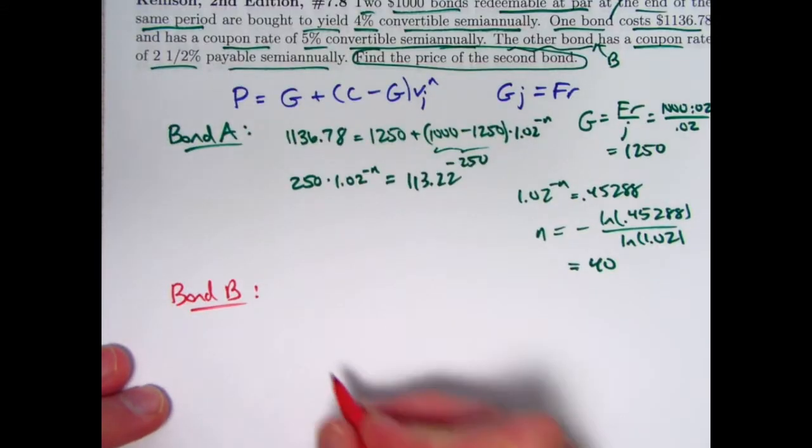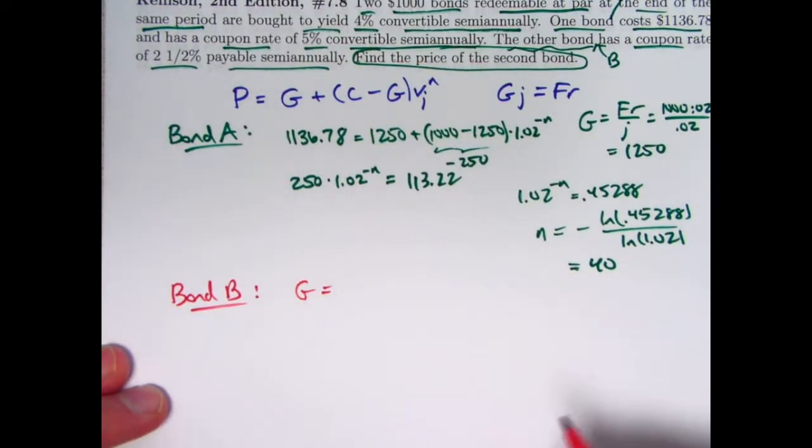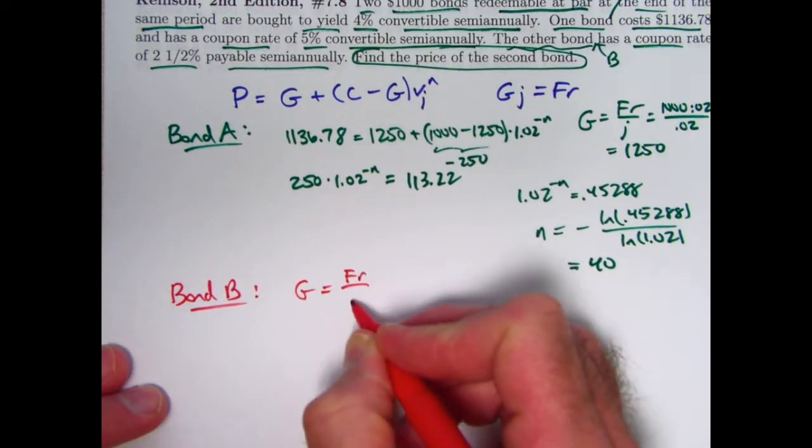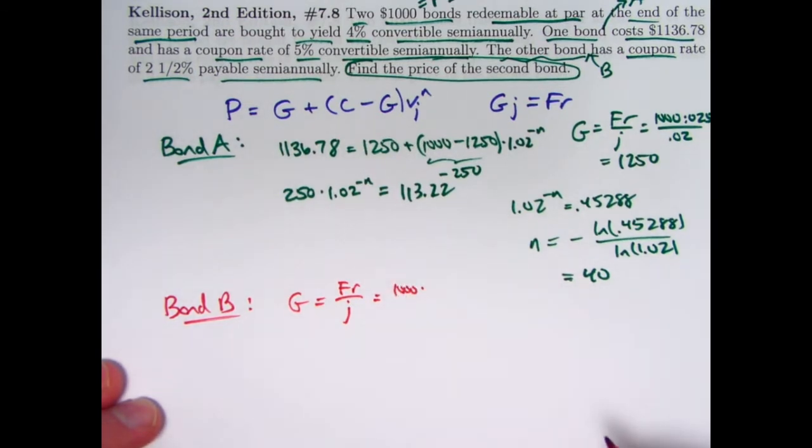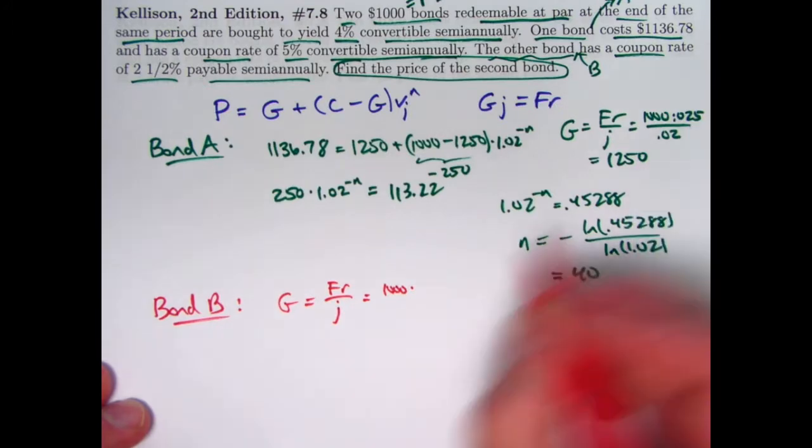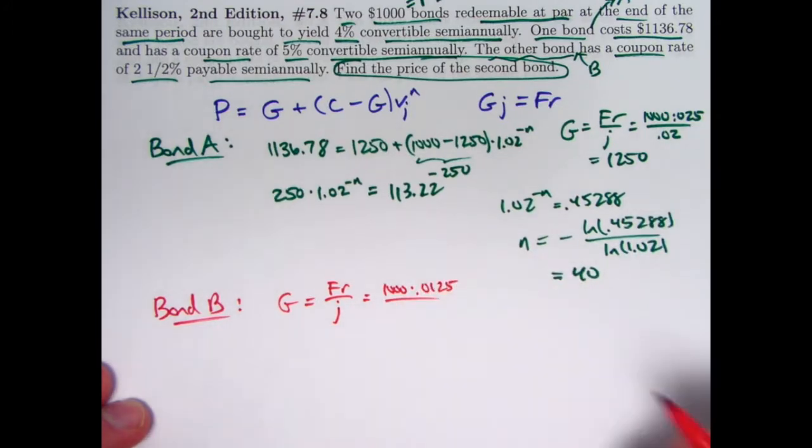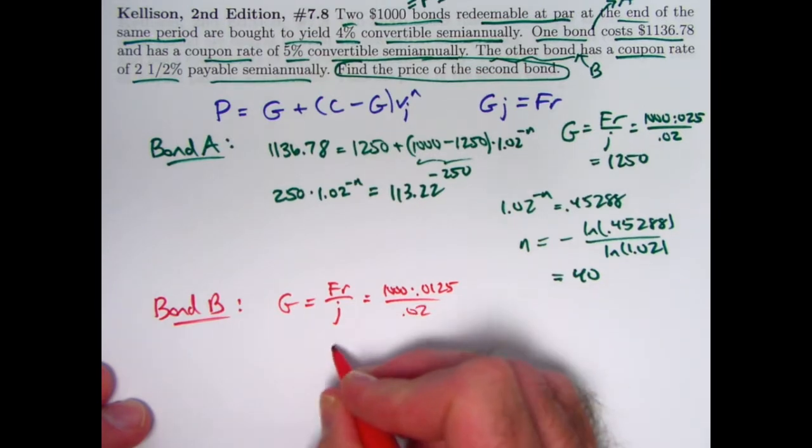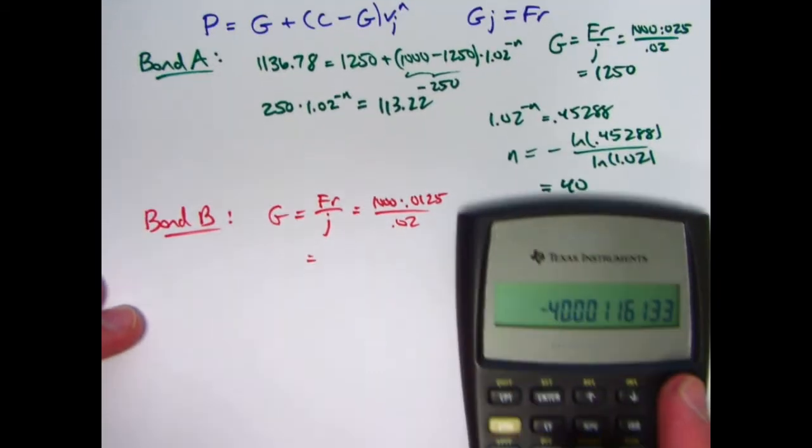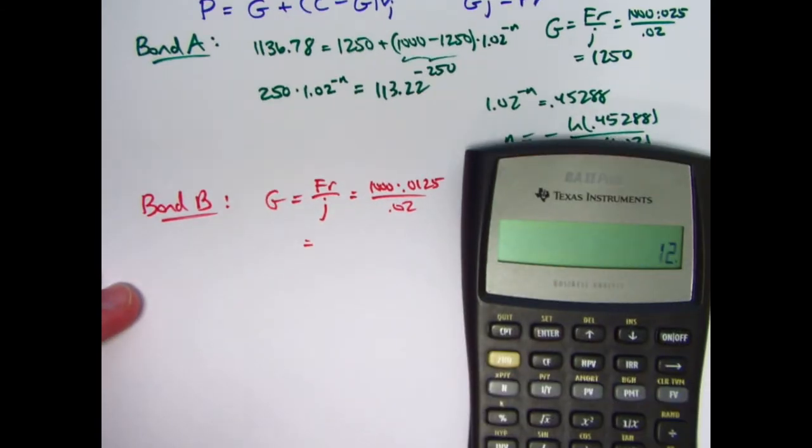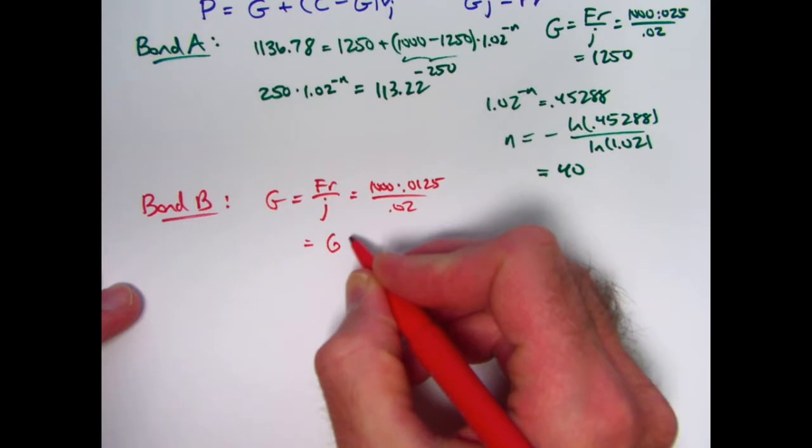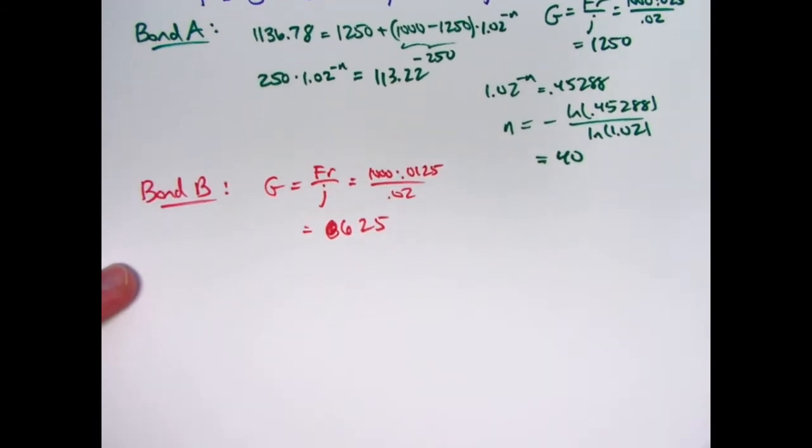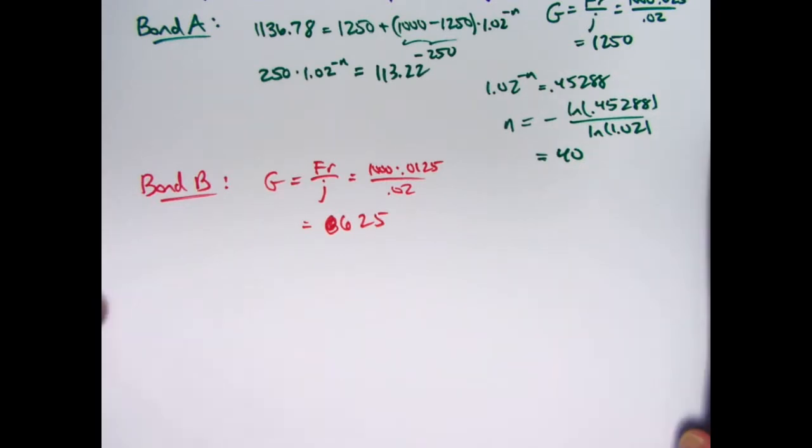Using the same formula, the base amount formula. First, let's find the base amount for bond B. Once again, that's F times R over J. F is still 1,000. The coupon rate is different. It's half of what it was before. It's half of this, which would be 0.0125. The yield rate's the same, though, 0.02. The coupons themselves are $12.50. Take 12.5, divide by 0.02. Capital G, the base amount here is smaller. It's 625 instead of 1,250. It's half of what it was before.